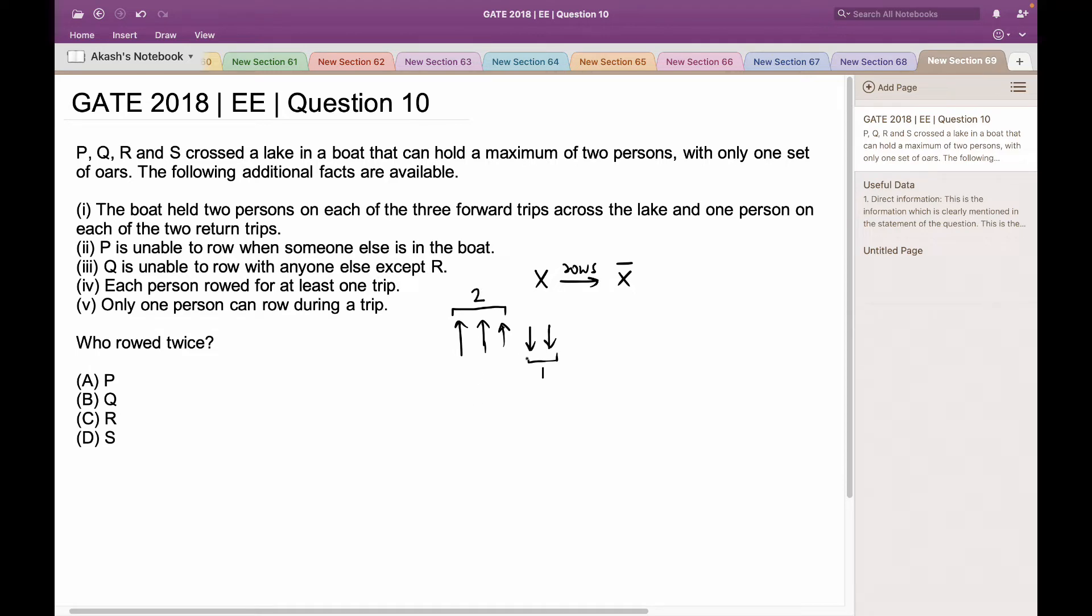Which also means that Q cannot row during the return trip, as he has to row every time with R. During the first forward trip, let us send Q and R together with Q rowing the boat. Now, during the second return trip, R has to return the boat, as Q cannot return the boat alone.